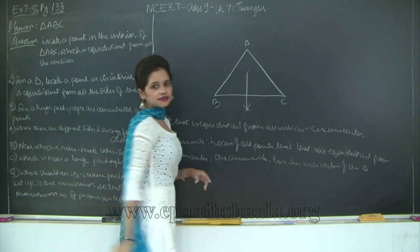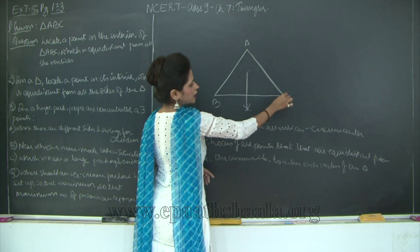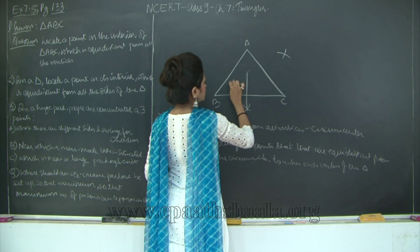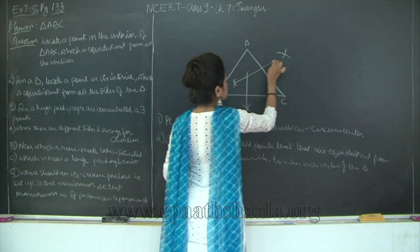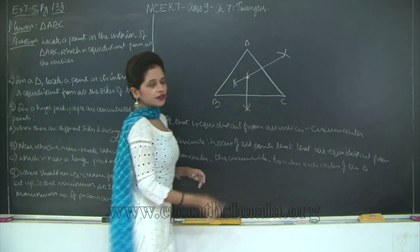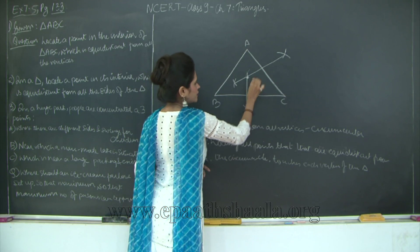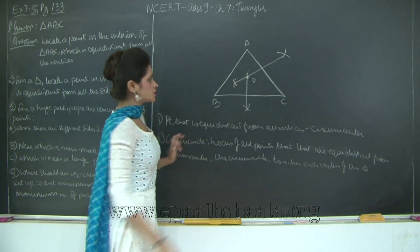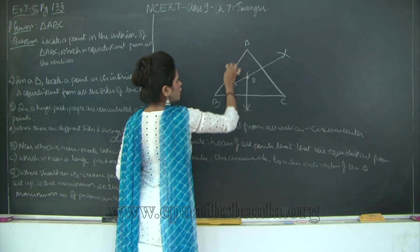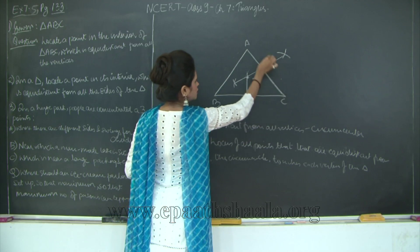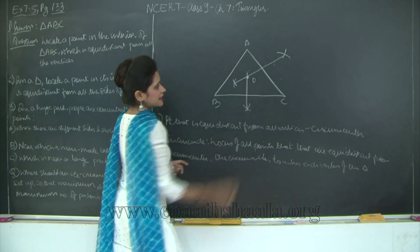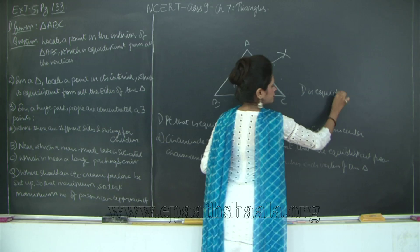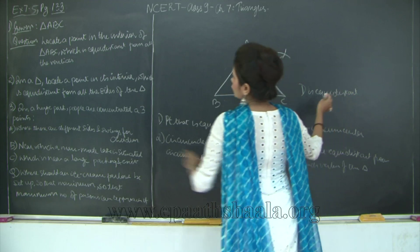Then I take the perpendicular bisector of AC. I will take the perpendicular bisector of AC, and the point where they intersect — I will call it D — is my circumcenter. This point D is equidistant from all the vertices of my triangle. So using D as the center and DA, DB, or DC as the radius, you can draw the circumcircle.